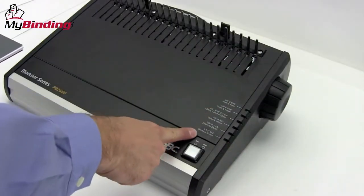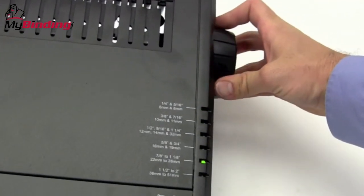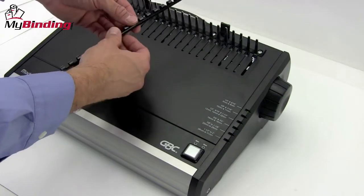When your project is all punched and organized, select from the side of the machine the size plastic comb that you'll be using. Turn the dial up and down and watch the LED light as it lights up the particular size.